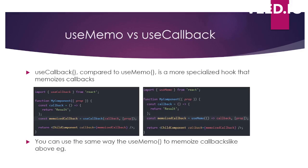useCallback is a specialized case of useMemo where we memoize only callback functions. With useMemo you can memoize any value, but useCallback is specific to callbacks. You can achieve the same result using useMemo by wrapping the callback in an arrow function, but useCallback is a dedicated hook for that purpose. It's essentially a special case of useMemo.